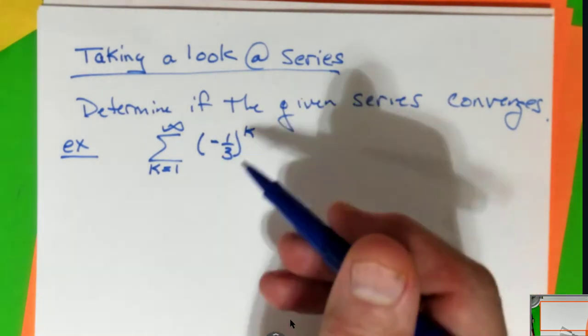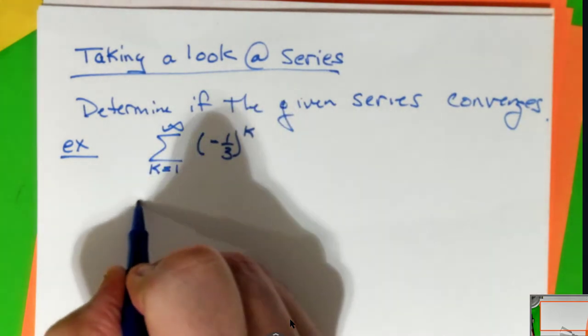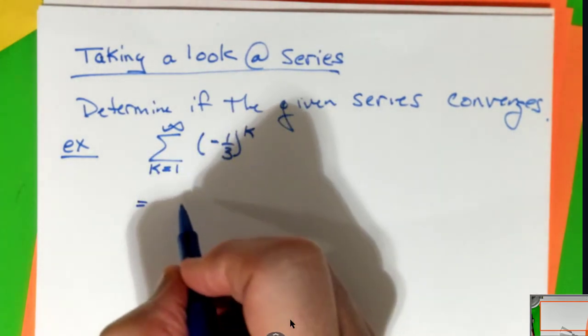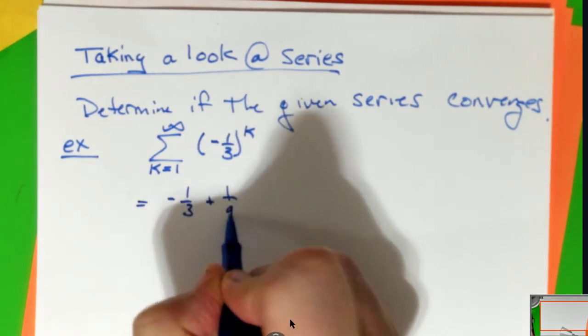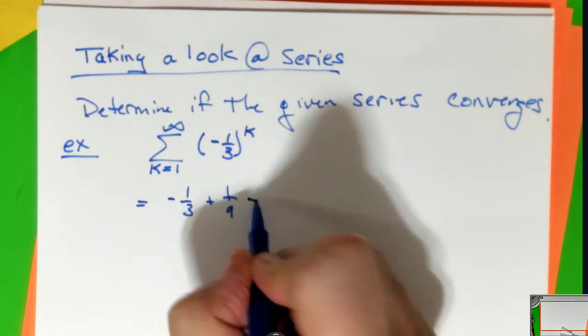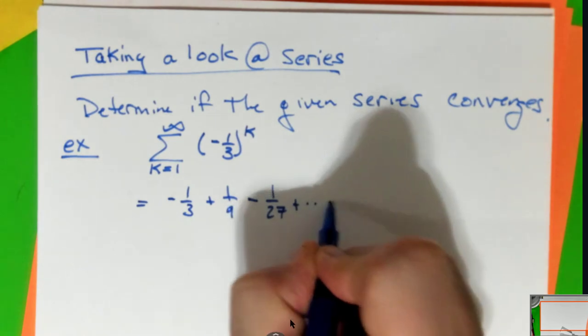So I'm given this. I can tell automatically it's geometric, but notice it's not in the right form. So what I'm going to do is write out our first few terms: minus a third plus a ninth, minus one twenty-seventh, and we keep going.